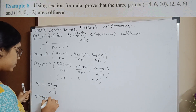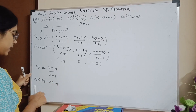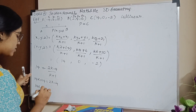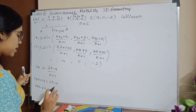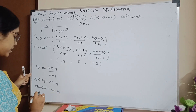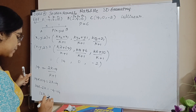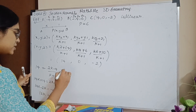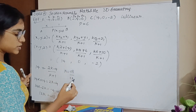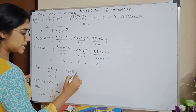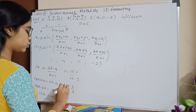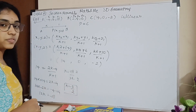Cross multiplying: 14K plus 14 equals 2K minus 4. Bringing terms to the left hand side: 14K minus 2K equals minus 4 minus 14. So 12K equals minus 18. Therefore K equals minus 18 divided by 12, which simplifies to K equals minus 3 divided by 2. So I have found the value of K.